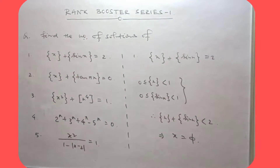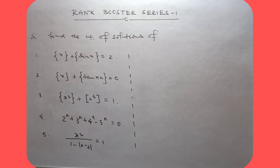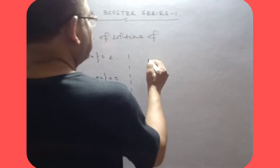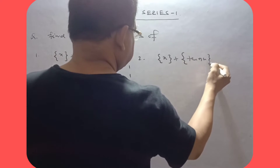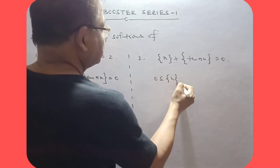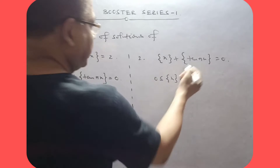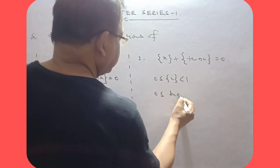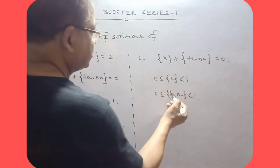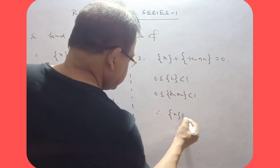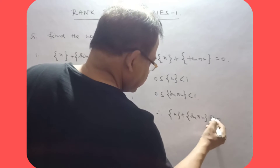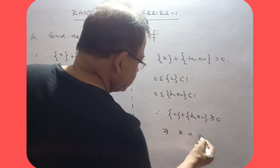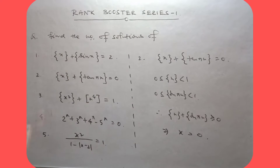Next, x equal to 5: fractional part of x plus fractional part of tan(πx) equal to 0. Since the fractional part of x is greater than or equal to 0 and fractional part of tan(πx) is also greater than or equal to 0, both must equal 0 for the sum to be 0. So the solution is x = 0, and for x = 0 the statement is true.